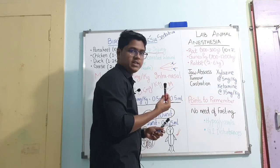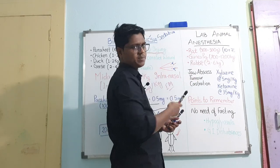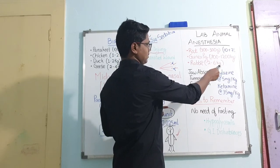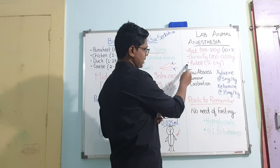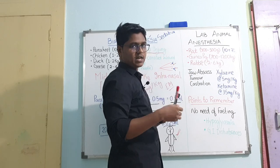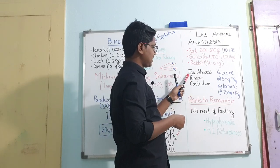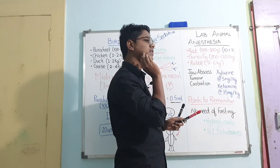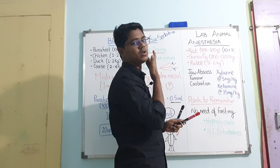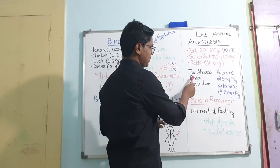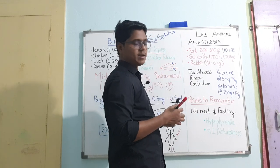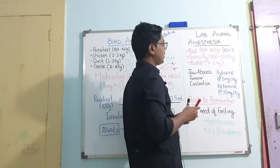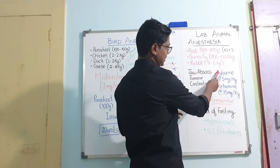The laboratory animals most commonly presented to your dispensary are rat, guinea pig, and rabbit — these are the body weights. Common surgeries you will encounter at field level include jaw abscess, which is very peculiar in rabbits — you will find abscess pockets just below the jaw — as well as tumor removal and castration, specifically in male rabbits.